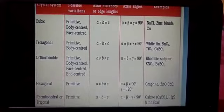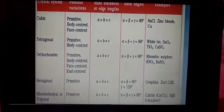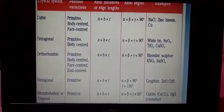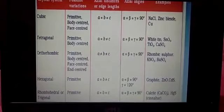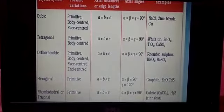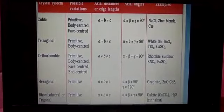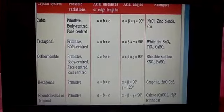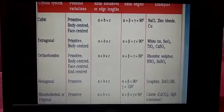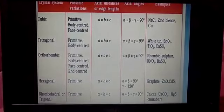In the orthorhombic system, a ≠ b ≠ c and α = β = γ = 90°. Examples: potassium nitrate, potassium sulfate. In the monoclinic system, a ≠ b ≠ c, α = γ = 90° but β ≠ 90°. Example: sodium sulfate decahydrate.